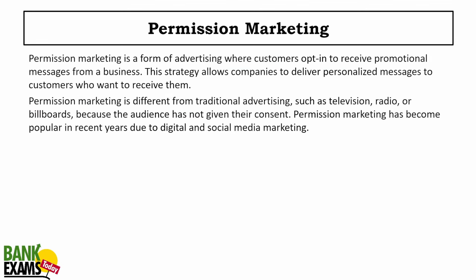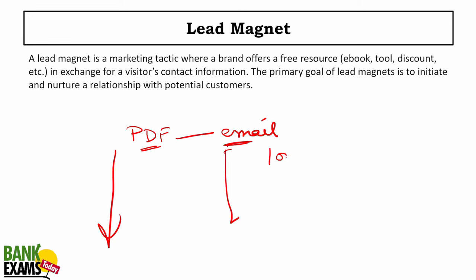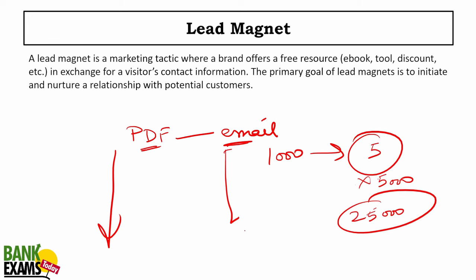Permission marketing: you give me your email yourself to download a PDF — I'm not buying a database. You are opting in to receive promotional messages. That is permission marketing. Lead magnet: for example, I give you a free PDF link, you open it, I ask for your email, give you the PDF, and then start sending you emails promoting my product. If I spent 10,000 rupees on the PDF and made 25,000 rupees from resulting sales, that's lead magnet in action.